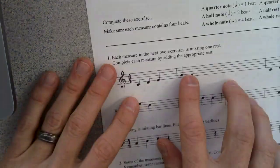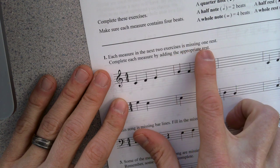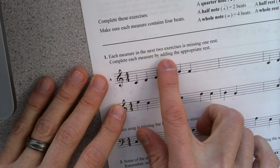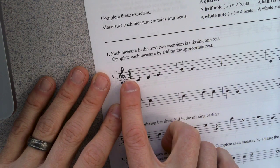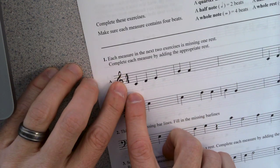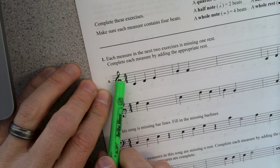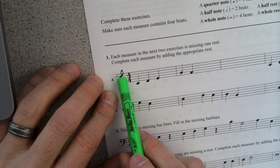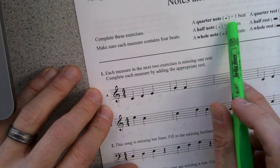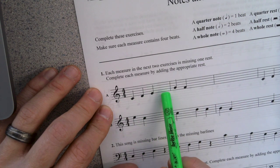Let's start with notes and rests. So each measure in the next two exercises is missing one rest. Complete each measure by adding the appropriate rest. We know from this fraction that there are four quarter notes in each measure. Number on top is the number of notes. Number on the bottom is the quality of the notes. So I need to have four quarter notes. I've got one, two, three. I'm missing one.